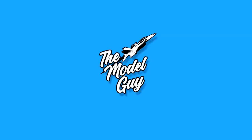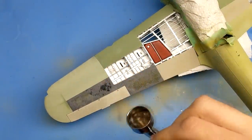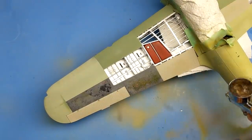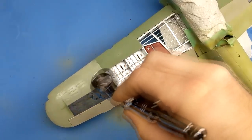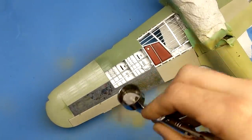Hello viewers and welcome back to another episode of the Model Guy. In this episode we will be finishing up the build of the Airfix 1:24 Typhoon. In the last episode I finished up painting the main colors on the Typhoon and now we're going to move on to weathering.